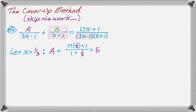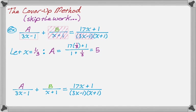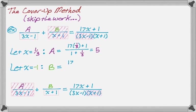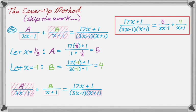Now focusing on B, which is above x plus 1. Mentally multiplying everything by x plus 1, the zero of x plus 1 is negative 1, so I let x equal negative 1. On the left-hand side, cover up everything that doesn't involve B. On the right-hand side, cover up the x plus 1 and substitute negative 1. Working out the math gives B equals 4. So the original can be rewritten as 17x plus 1 over (3x minus 1)(x plus 1) equals 5 over (3x minus 1) plus 4 over (x plus 1).